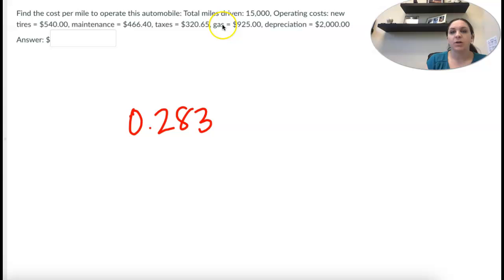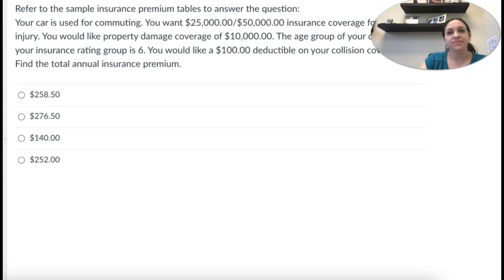And then remember we talked about cents, so only two numbers because 0.3 is less than five, this eight stays the same. Okay, so 28 cents per mile to operate the car.